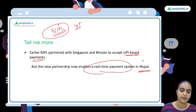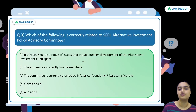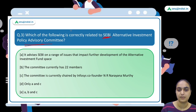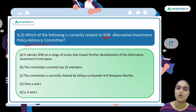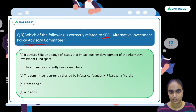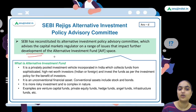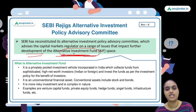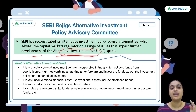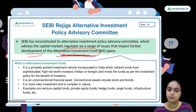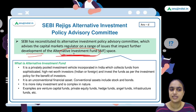The third question relates to SEBI's Alternative Investment Policy Advisory Committee, which has recently been reconstituted. This committee advises SEBI on the development of the alternate investment fund space — an unconventional financial asset class where money is pooled from high net worth individuals and sophisticated investors.